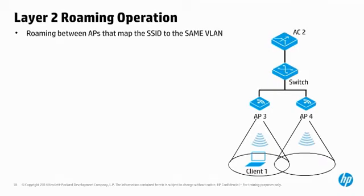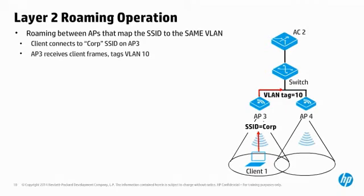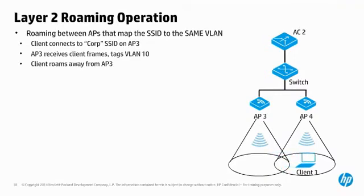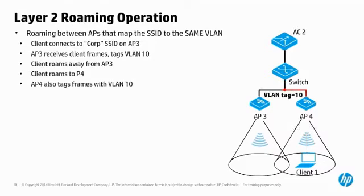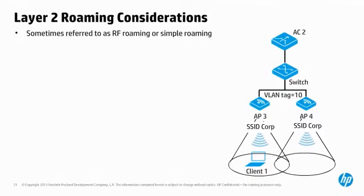Layer 2 roaming occurs when you are roaming between APs that map the SSID to the same VLAN. For example, you initially connect to the Corp SSID on AP3. When AP3 receives WLAN frames, it bridges them onto the Ethernet segment with a VLAN tag of 10. Later, the client walks down the hall, roaming from AP3 toward AP4. The client associates to the Corp SSID on AP4, which is also configured to forward frames from the Corp SSID on VLAN 10. Layer 2 roaming is sometimes referred to as RF roaming or simple roaming, as most APs natively support this feature.